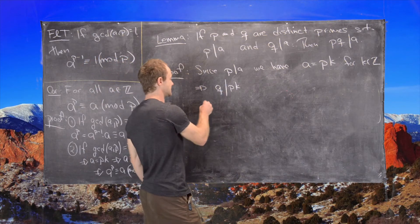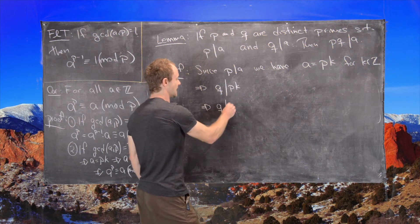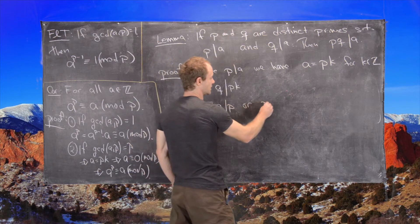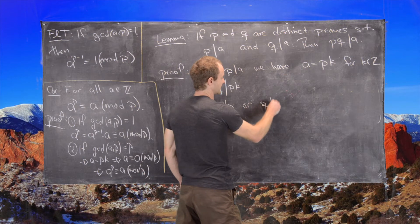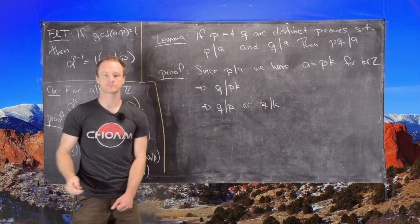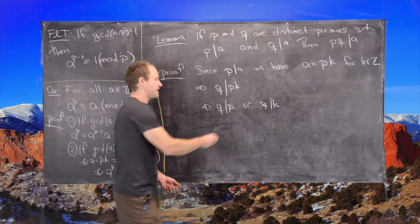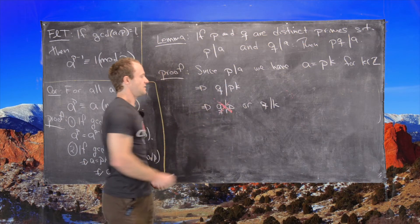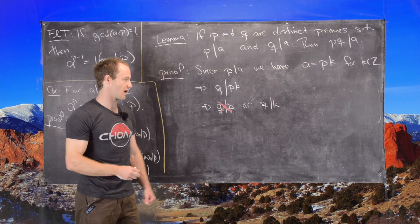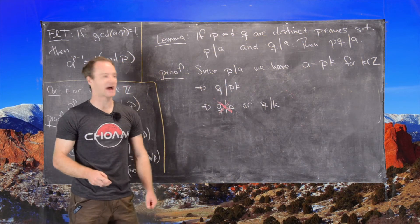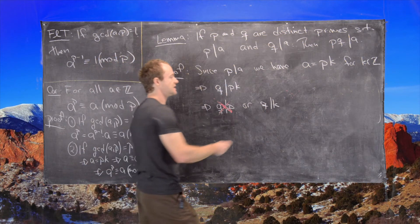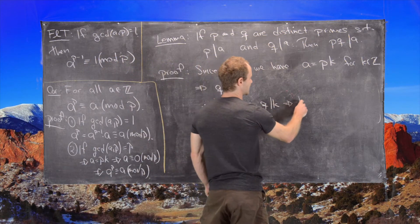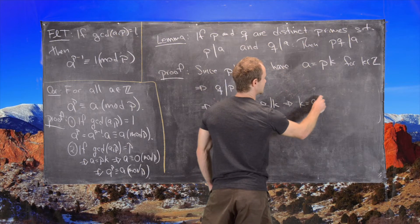Because that's just another way of writing A. But that tells us that Q divides P or Q divides K. So now we know that this one is impossible because we're dealing with distinct primes. So that means Q has to divide K. And so that means we can write K as Q times L.